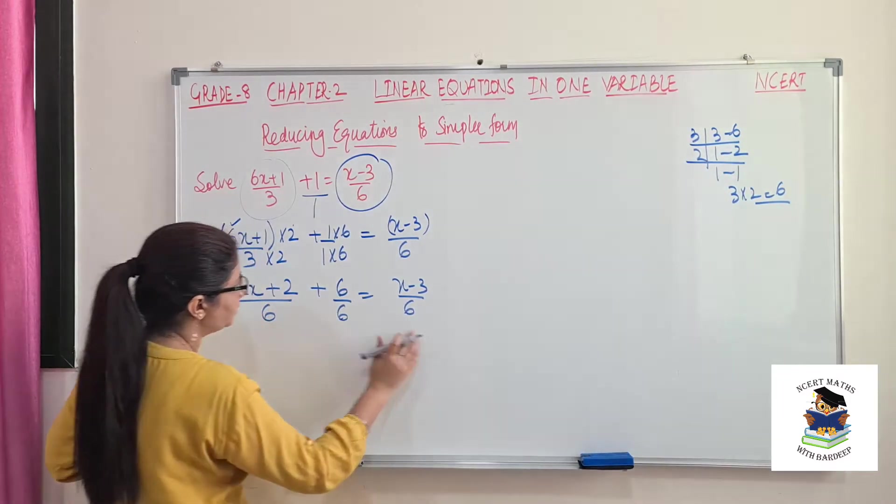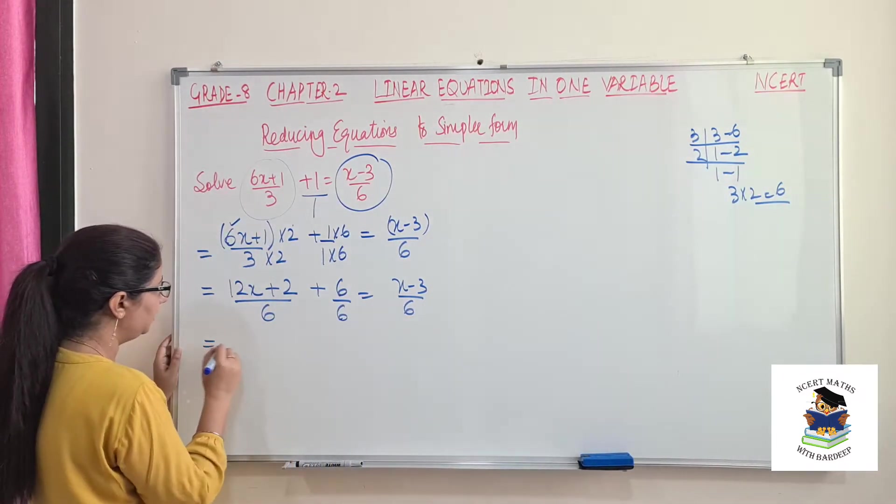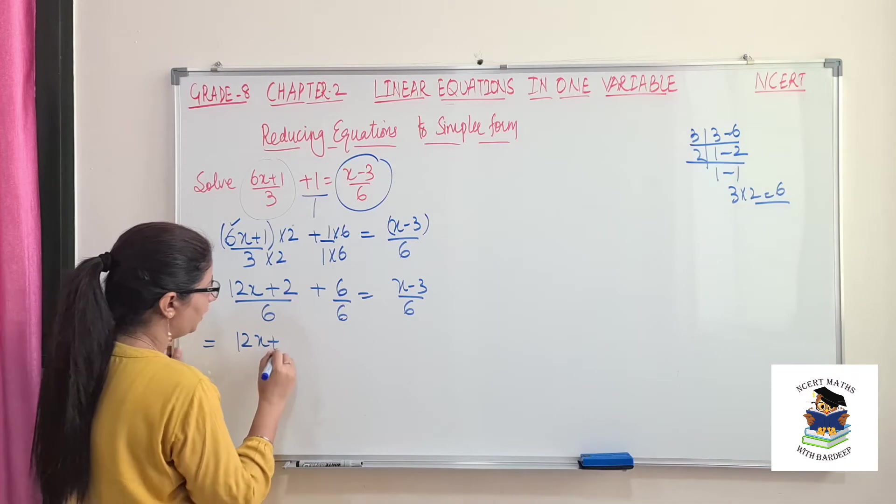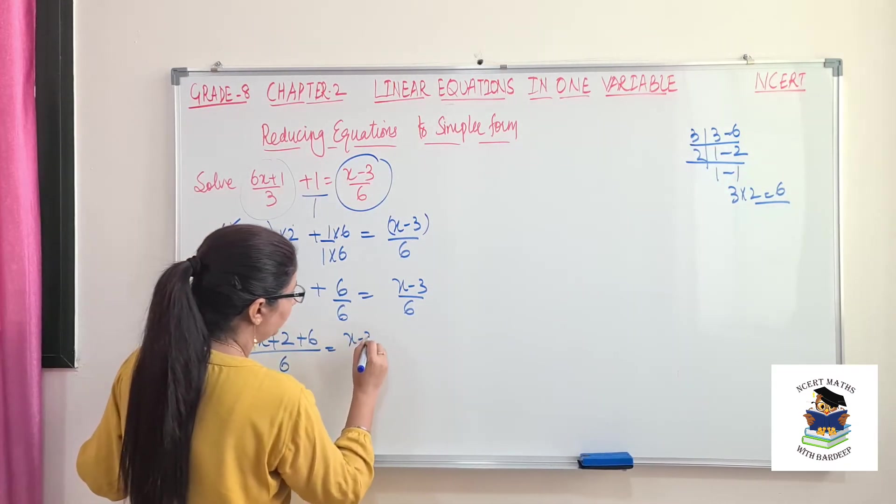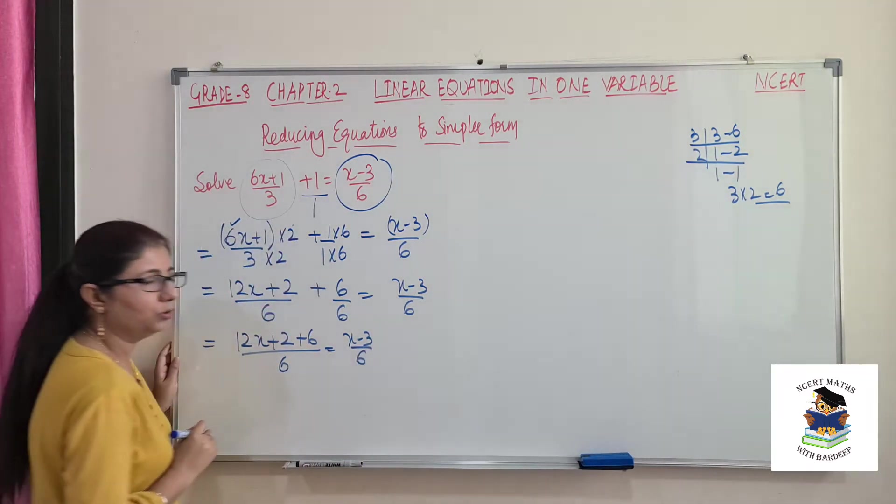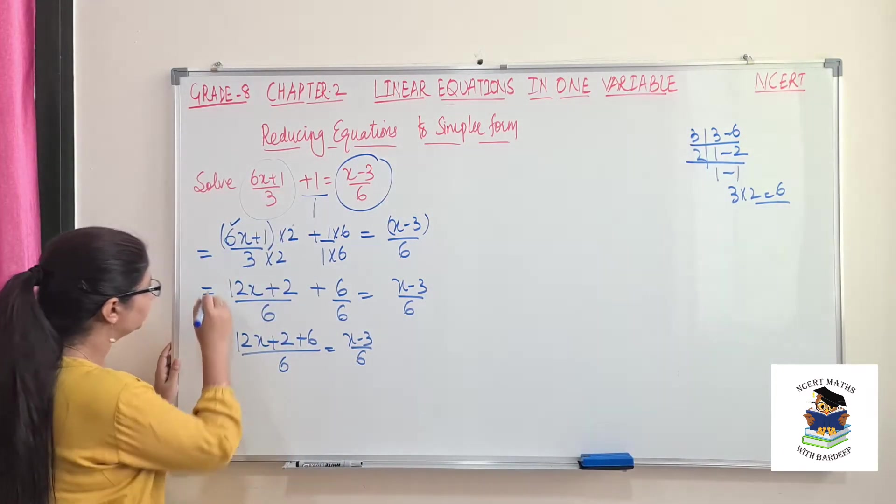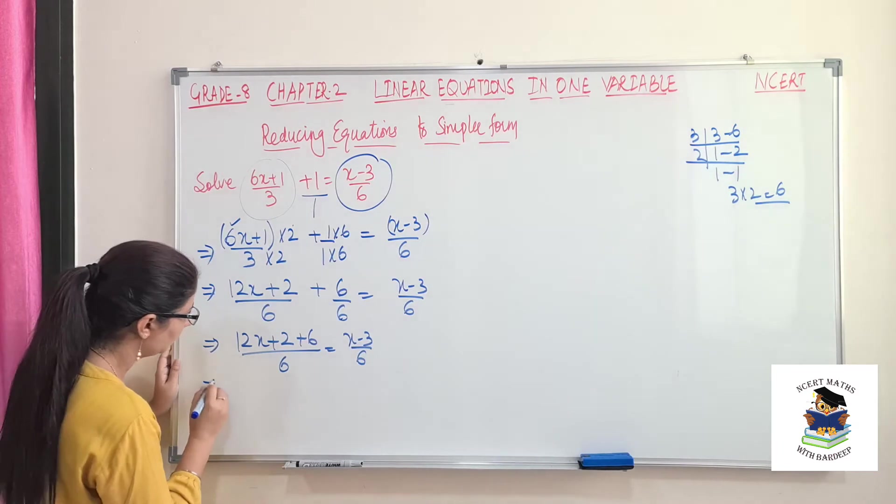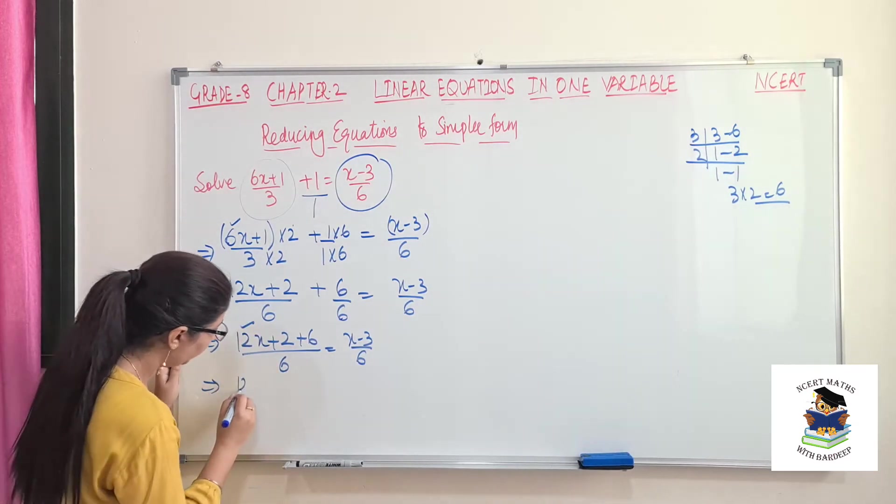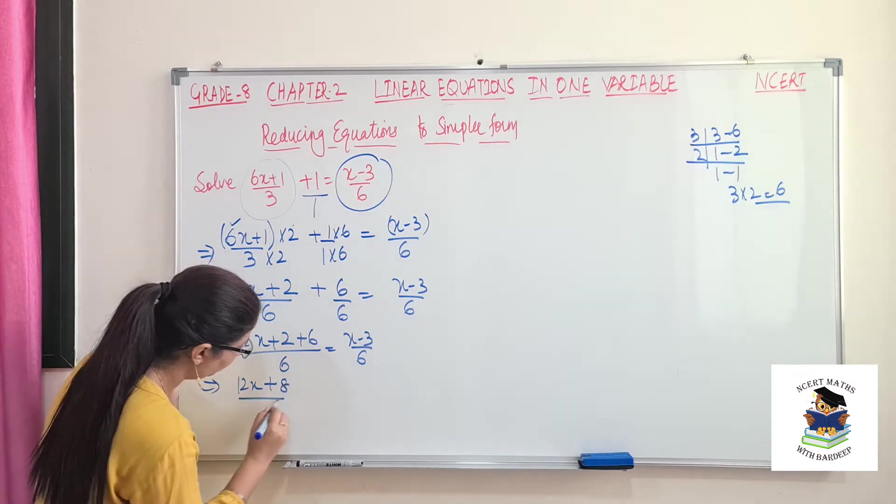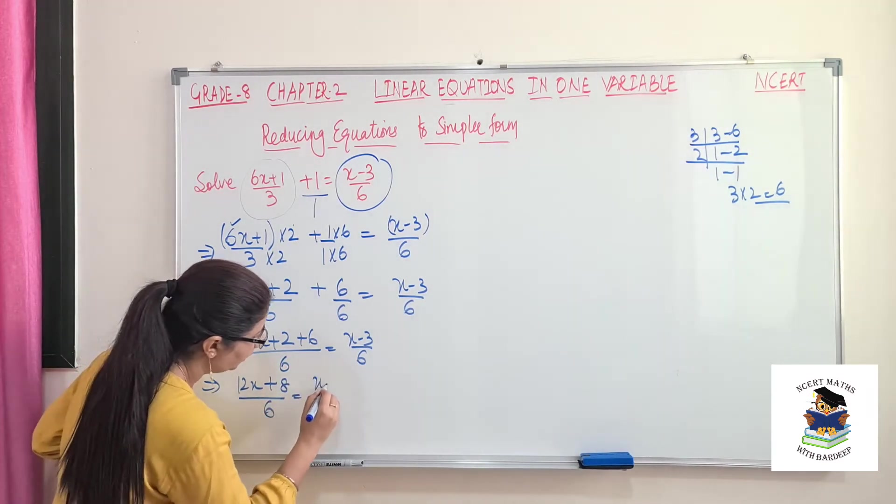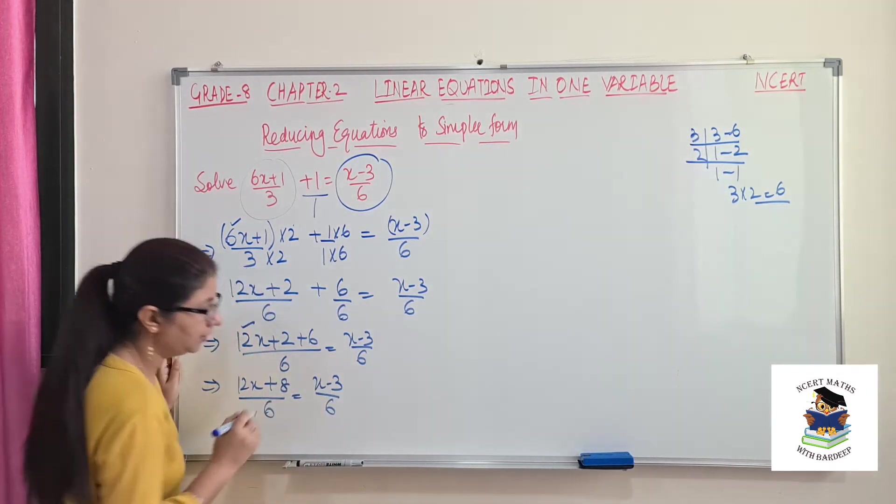So now we see we have same LCM. First we will combine this left hand side. This is (12x + 2 + 6)/6 = (x - 3)/6. So 12x, we don't have any like term for this. 2 plus 6 is 8, so (12x + 8)/6 = (x - 3)/6.